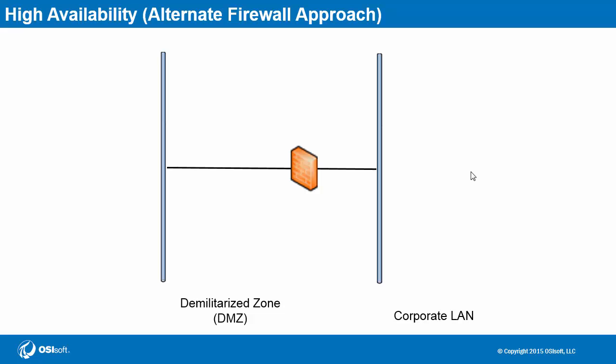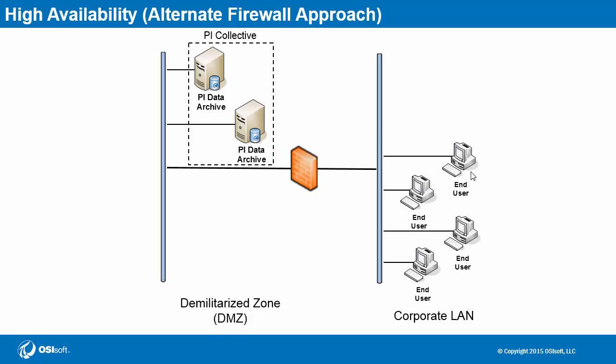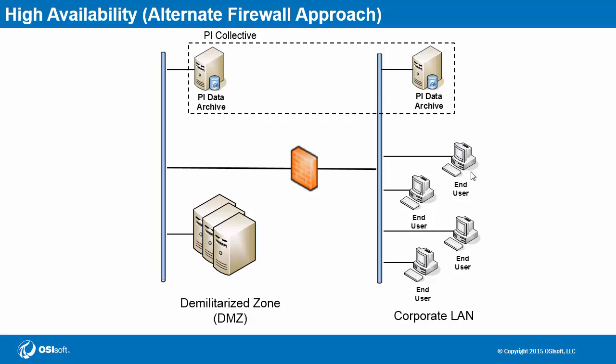One alternate approach to high availability is with the use of a firewall. Say we have a PI Collective in the DMZ and many users in the corporate network who all need access to PI System data. If all of the PI Data Archives live in the DMZ, access between the corporate network and the DMZ would need to be granted through the firewall. While this may be okay in some scenarios, imagine if mission-critical servers were also within the DMZ — a lapse in security configuration may allow unauthorized users to see or even change data on these servers. To remedy this, we can take one of the PI Collective members and place it in the corporate LAN, so PI client applications connect to that member and not the one in the DMZ. Users no longer need access to a sensitive network in order to retrieve PI System data.